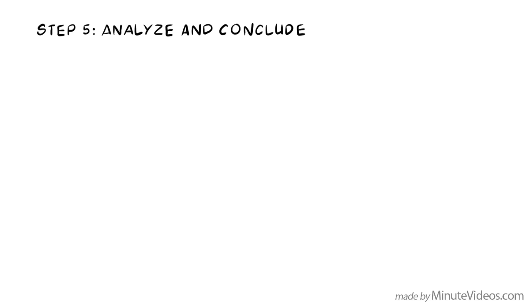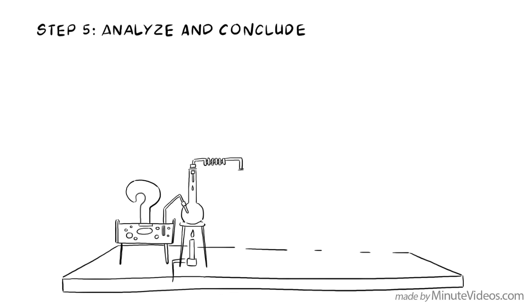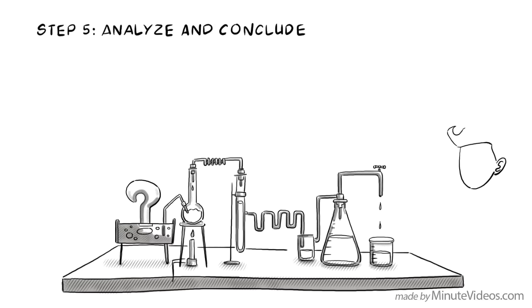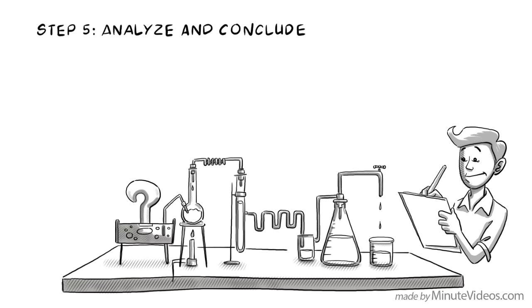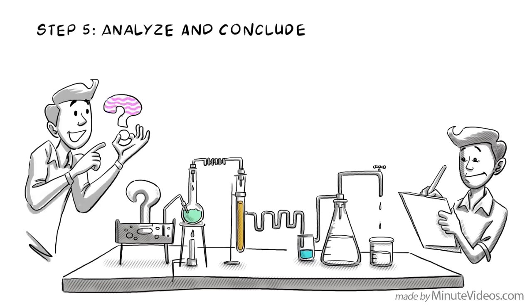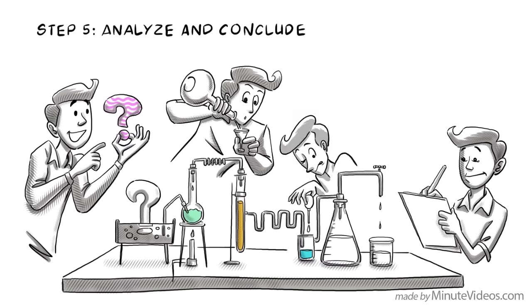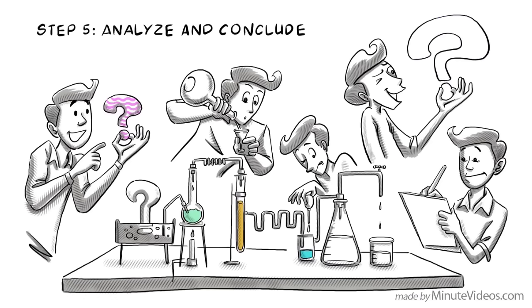Step 5. Analyze and conclude. Let's assume that you designed a very careful experiment, controlling for as many variables as possible. Now you can analyze the data to see if your hypothesis is correct or incorrect. Depending on your findings, you may want to change your hypothesis or change the design of your testing. Perhaps you have discovered an even more interesting question. This stage of the scientific method can be repeated as many times as necessary, until you find just the right hypothesis and test method to find accurate results.